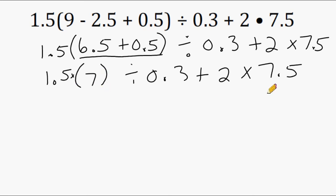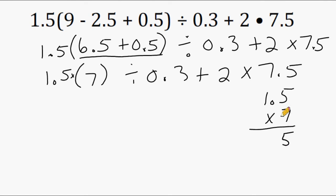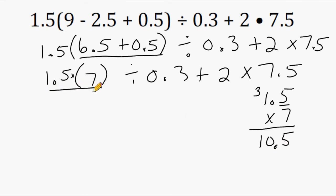So let's go off on the side here and multiply 1.5 times 7. 7 times 5 is 35, we carry the 3. And 7 times 1 is 7 plus 3 is 10. There is one number after the decimal, so the same must hold true in the answer. So our decimal point goes here, making this part of our expression equal to 10.5.